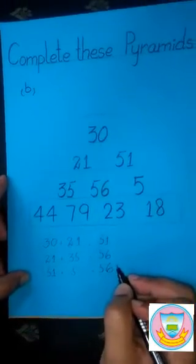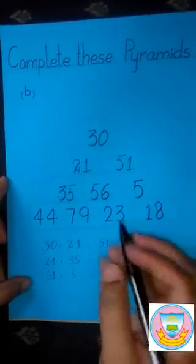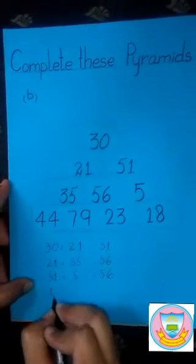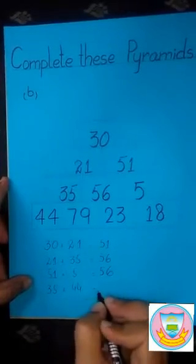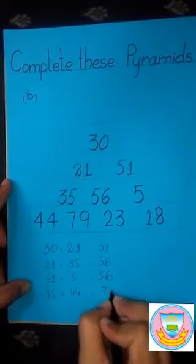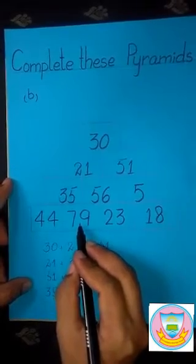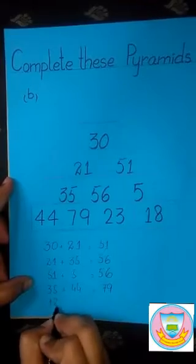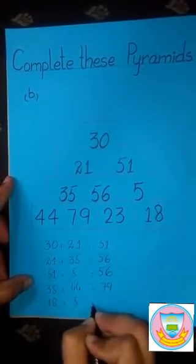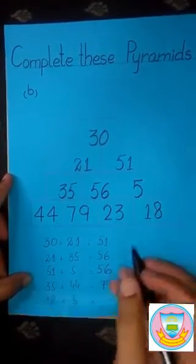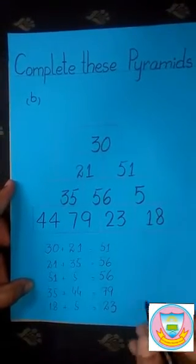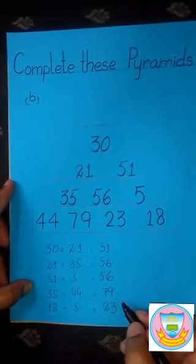Our next equation: we add 35 plus 44, and we get the answer of 79. Now we add 18 with 5. 18 plus 5, and we get the answer of 23. Students, these are the number equations of this pyramid.